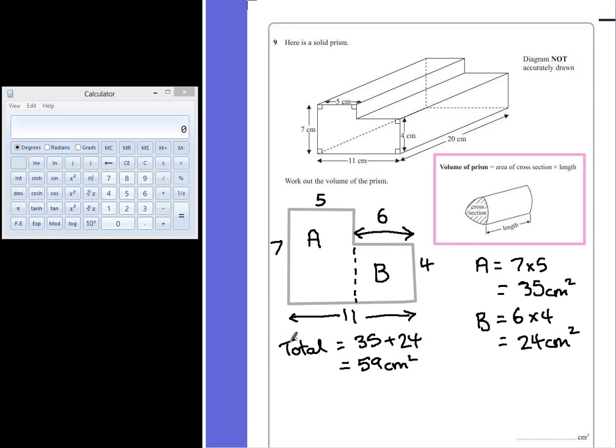To find the volume we have to multiply this value by the length or the depth of the prism. So the volume of this shape can be found by multiplying 59 by 20. 59 multiplied by 20 gives us a volume of 1,180 cm cubed.